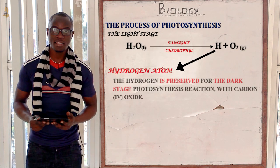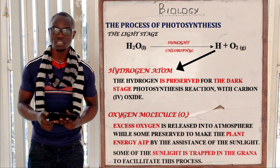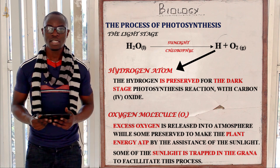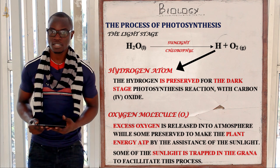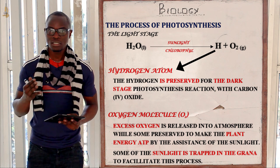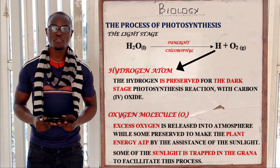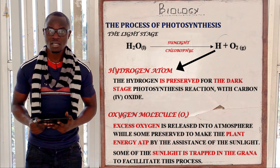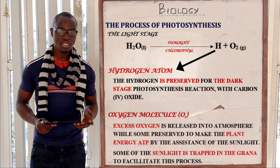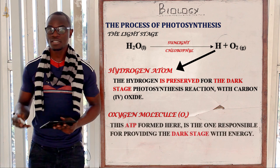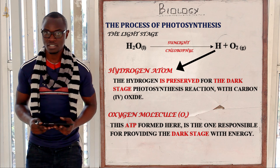The hydrogen atoms are preserved in the stroma for the dark stage or the light-independent stage, while the oxygen molecules diffuse out of the chloroplast, into the leaf, and out through the stomata. Some of the sunlight is also preserved in the grana — the chlorophyll absorbs some of the sunlight to manufacture plant energy called adenosine triphosphate, ATP. This ATP is stored for the light-independent stage, which is the dark stage.